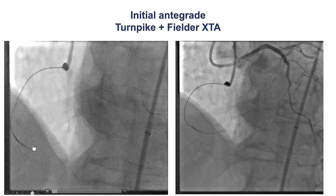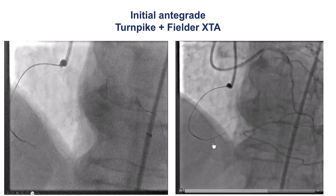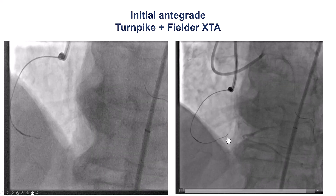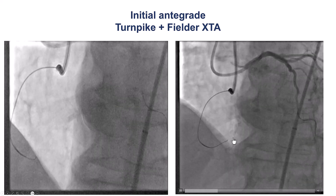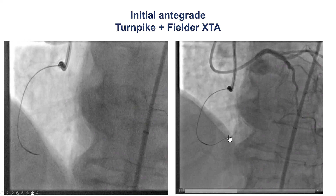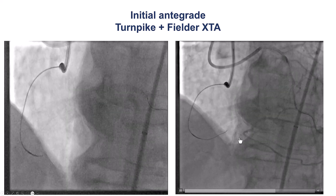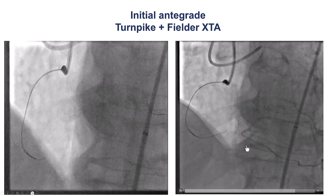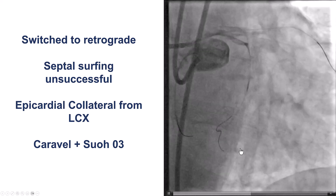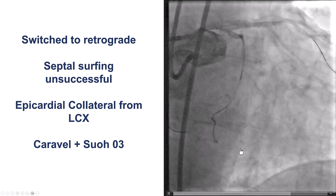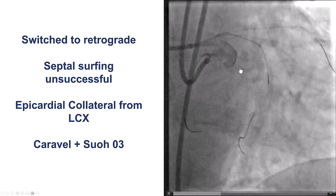We tried with a Turnpike microcatheter and a Fielder XTA, and we did make some progress within the occlusion, but despite attempts, the wire kept knuckling within the occluded segment of the right coronary artery. So after multiple attempts, we decided to change to retrograde crossing.